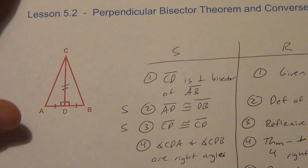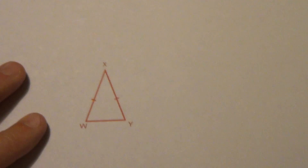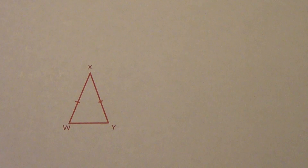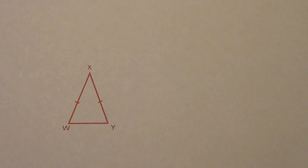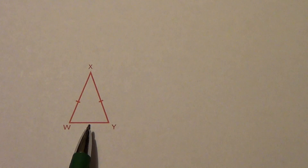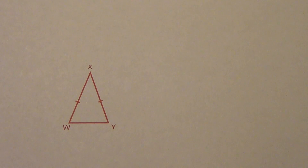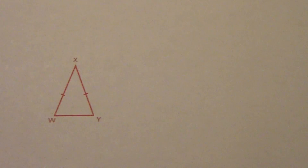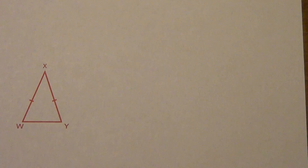Now let's take a look at the converse of this theorem. The converse is where we switch the order. The original said: if a point is on the perpendicular bisector of a segment, then that point is equidistant to the endpoints. The converse already has the equidistant part — we just switch the order.